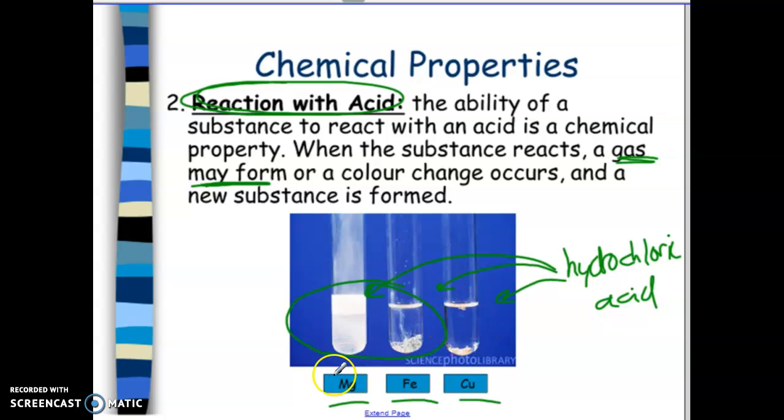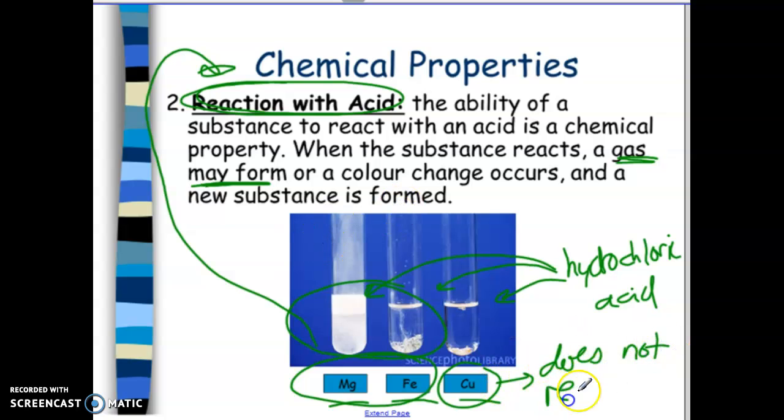So by saying magnesium and iron can react with an acid, we're talking about its chemical property. It has the ability to do that. Copper does not react with an acid. But again, that's describing its unique chemical property. So here we're looking at changes of chemicals. We're looking at chemical reactions.